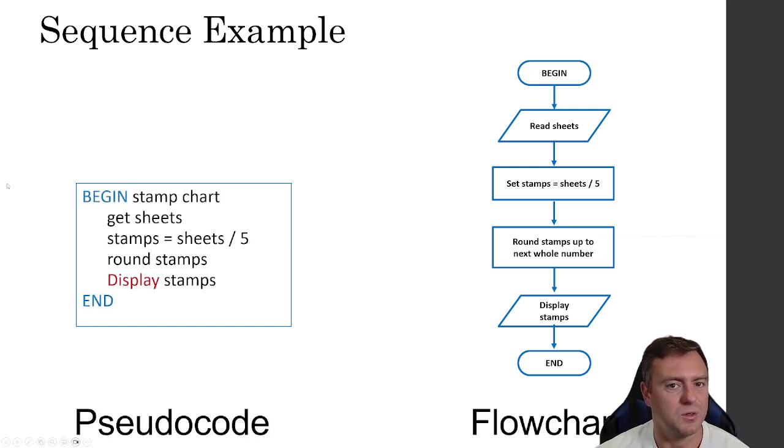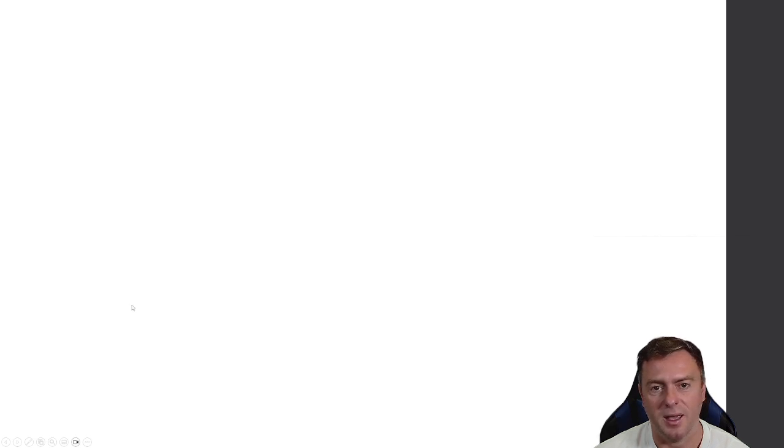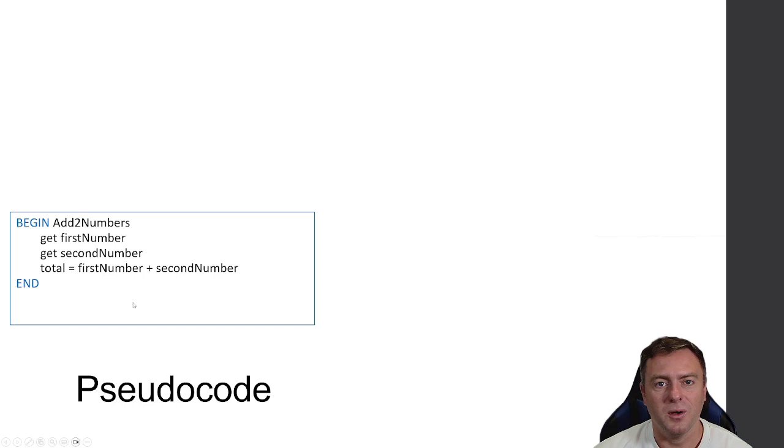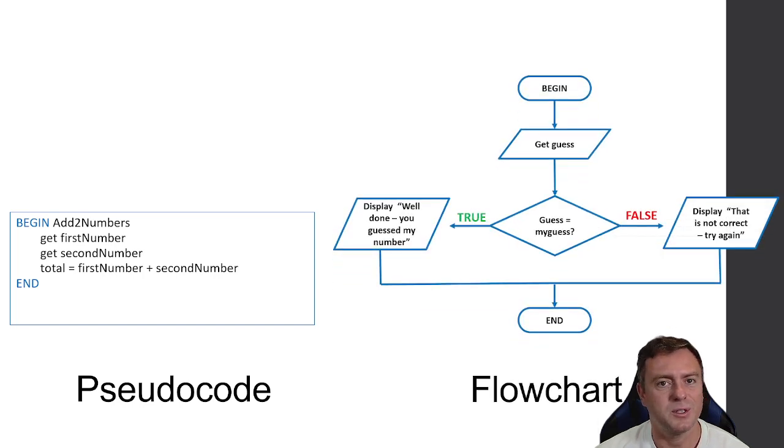And then there's the pseudocode. So pseudocode, begin stamp chart. So get stamps, stamps is equal to sheets divided by five, round the stamps, display the stamps, end. So pseudocode, like I said, is the text version, whereas the flowchart has those nice pictures to make it a bit clearer. So you need to understand when's the right time to use both or either of them.